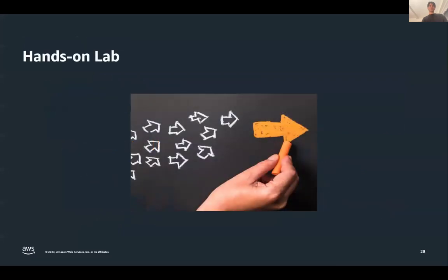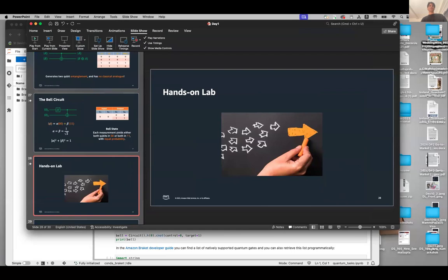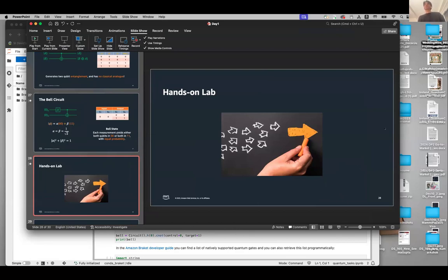Now it's time for the hands-on lab. But before moving to hands-on, are there any questions? There's a question in chat: this might be trivial, but are the state |0⟩ and the state |00⟩ the same or different? They are different states — |0⟩ has only one qubit in state 0, while |00⟩ represents a two-qubit state where both qubits are in the zero state.